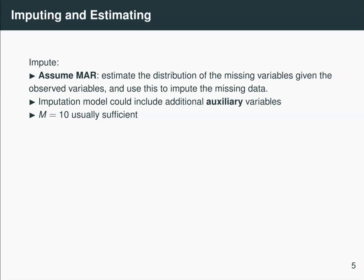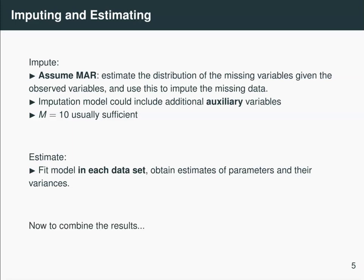Now, after you've done your imputation, you get m copies of your dataset. So you're going to fit the model in each dataset. And then you'll end up with estimates of your parameters and your variances in each dataset. And then what you have to do is to combine the results from your m models.